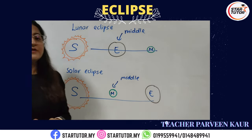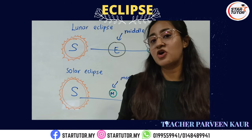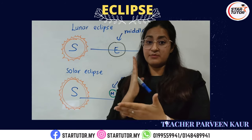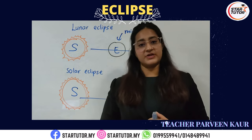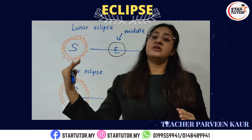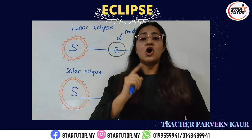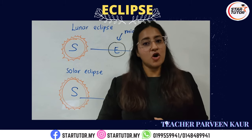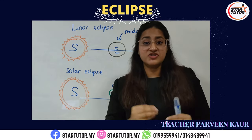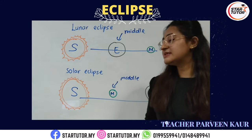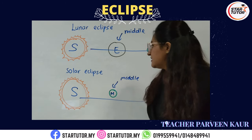You will understand that lunar and solar eclipses happen because there was a blockage of sunlight. You must remember the two properties of light: light travels in a straight line, and light cannot penetrate or pass through an opaque object. Opaque objects don't allow light to go through. In this case, the opaque objects are the earth and the moon, where they block the sunlight.